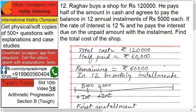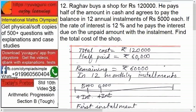Next, Raghav buys a shop for Rs. 1,20,000. He pays half of the amount in cash and agrees to pay the balance in 12 annual installments of Rs. 5,000 each. If the rate of interest is 12% and he pays the interest due on the unpaid amount with the installment, find the total cost of the shop.